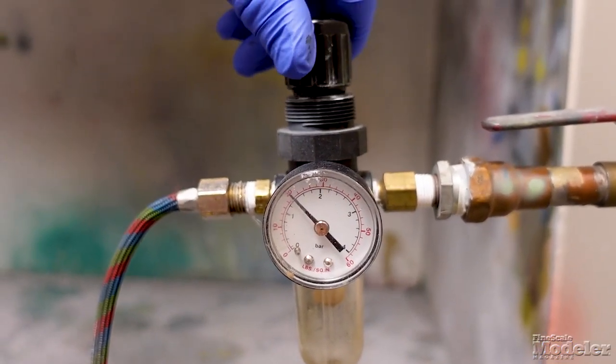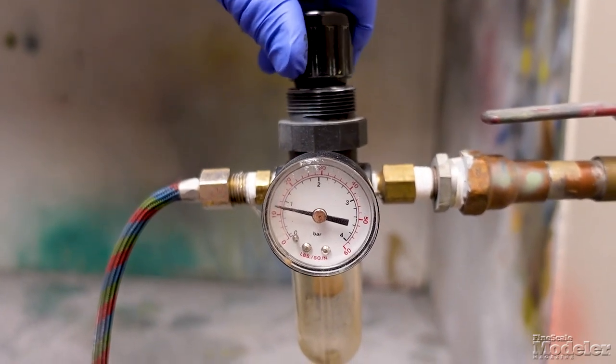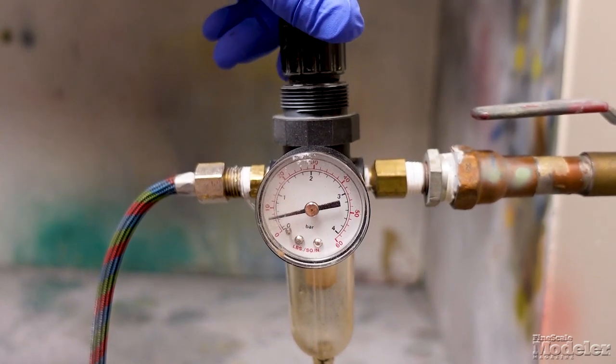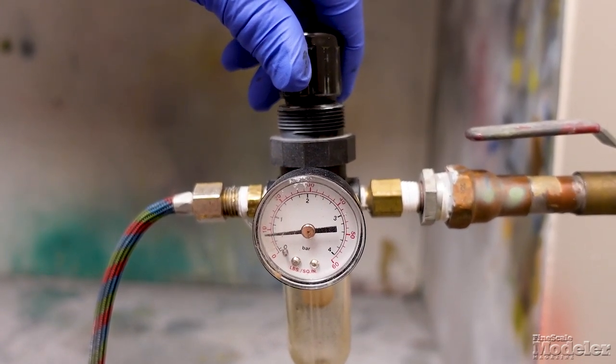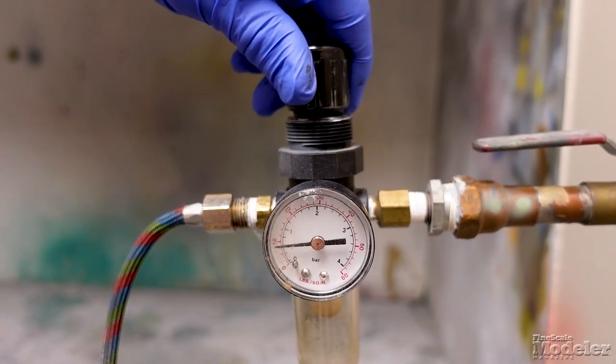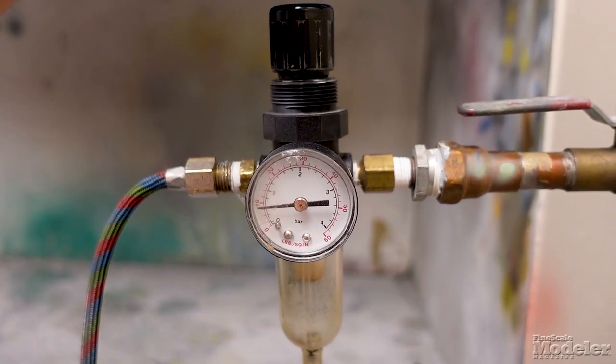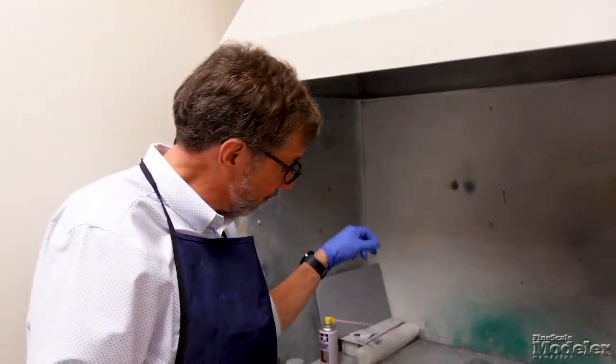So when you're setting your regulator, one of the things to keep in mind is that the pressure that you set it at is going to lose more pressure when you depress the trigger, so you want to adjust for that. I'm going to set it to about the lowest pressure I've been able to successfully airbrush at, which is about 8 psi. Any lower than that, and the paint doesn't atomize very well. It tends to splatter more than spray.